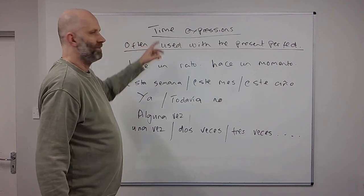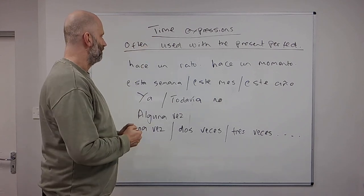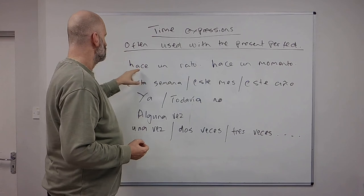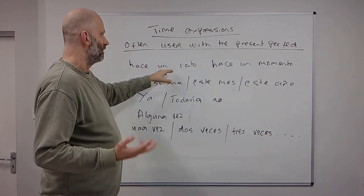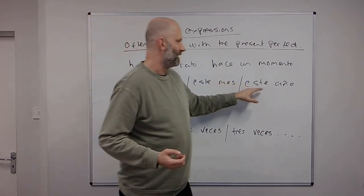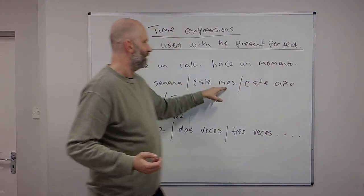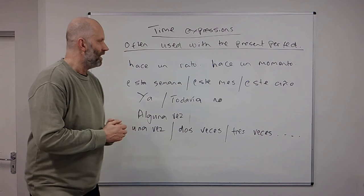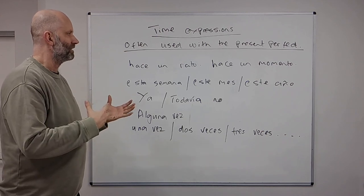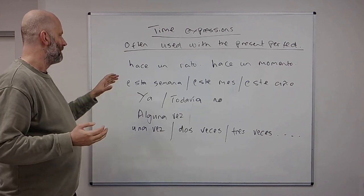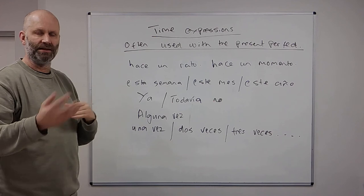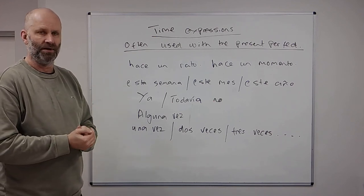So now finally we're going to look at time expressions which we often use with the present perfect. So we've got hace un rato, hace un momento, so un rato will be a short time, so a short time ago, a little while ago, a moment ago. Esta semana, este mes, este año, so this week, this month, this year. We're talking about expressions which emphasize the kind of recent past. It's not last. If it was last week, last month, last year, or two weeks ago, three weeks ago, if it's anything ago it would tend to be the past simple, the preterite.